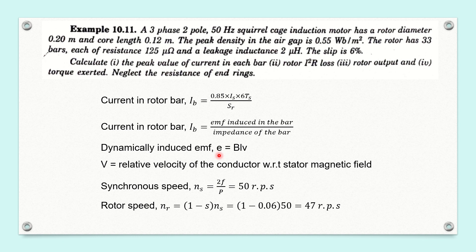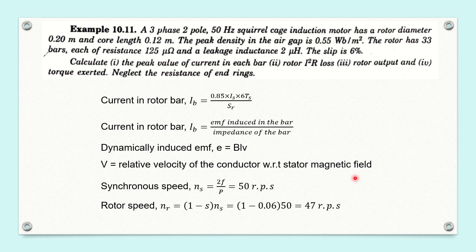Since this EMF is induced in the rotor due to the relative velocity between the stator magnetic field and the rotor, instead of V, we have to substitute the relative velocity between the stator magnetic field and the rotor conductor. The rotor is the rotating part, so we cannot substitute V as simply the rotor velocity. This V should be the relative velocity — not the rotor velocity, but the relative velocity between the stator magnetic field and the rotor.